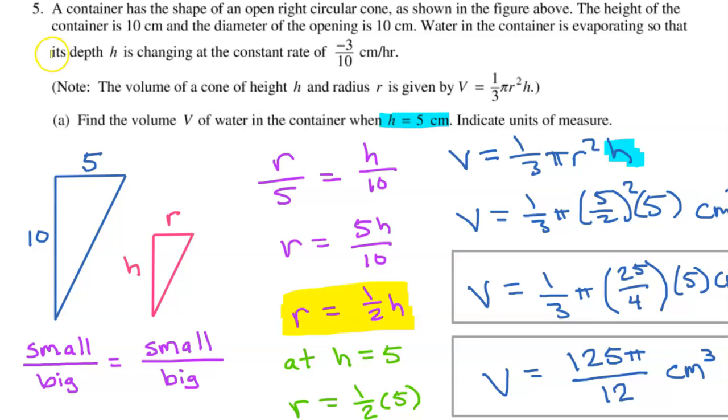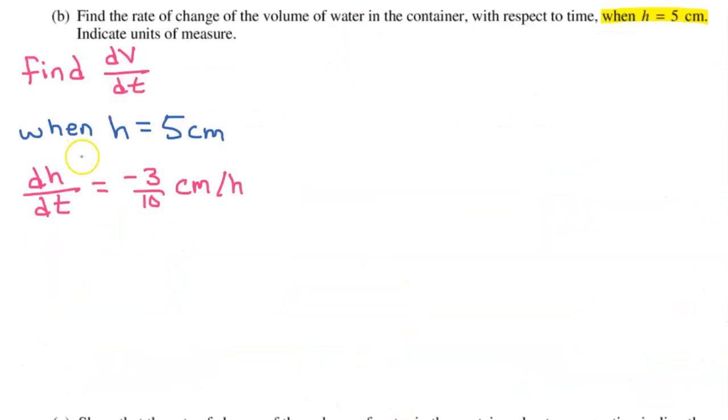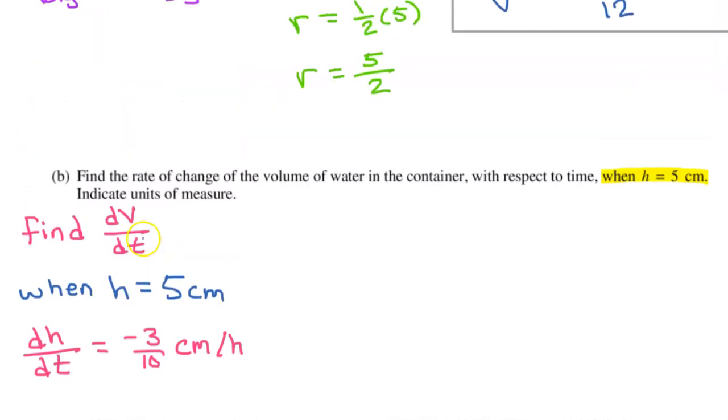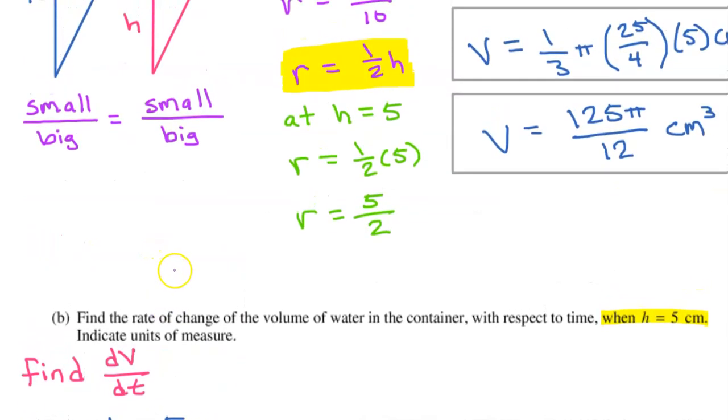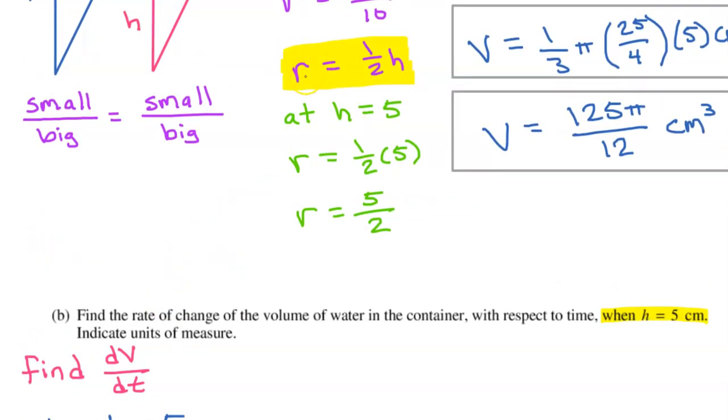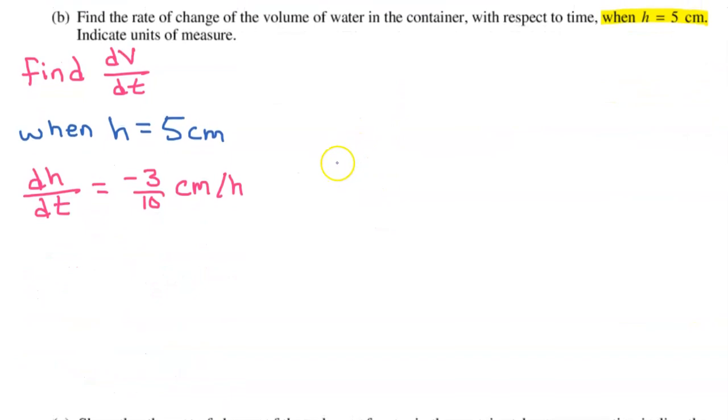In the setup of the problem, we were told that the depth h is changing at a constant rate of negative 3 tenths centimeters per hour. So that's dh/dt. So here's our inventory so far. Did we learn anything in part A that might be useful here in part B? So actually, we learned two important things. We learned the relationship between r and h: r equals one-half h. So let's add that to our inventory.